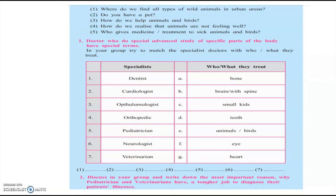Question number 2: discuss in your group and write down the most important reason why pediatrician and veterinarian doctors have a tougher job diagnosing their patients' illness. The most common thing between animals and very small babies is that they both cannot express their feelings — they cannot talk. A small baby cannot tell what is wrong, and similarly animals cannot express to the doctor why they are feeling unwell. That is why vets and pediatricians have a very tough time understanding the problem first, and only then can they solve it.